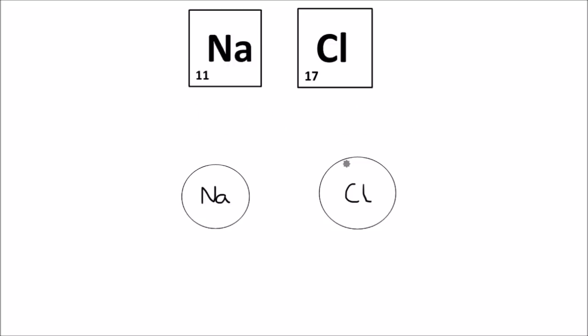Ionic bonding occurs when a metal atom bonds with a non-metal atom. So here's an example. Sodium is our metal and chlorine is the non-metal. And these two are going to bond ionically.